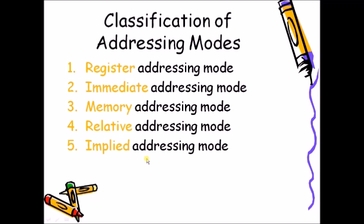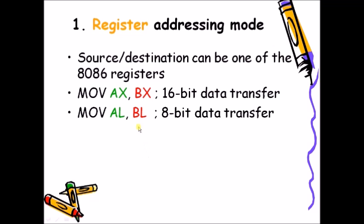In register addressing mode, the operand is placed inside a register. That register is given as part of the instruction. The source or destination can be one of the 8086 registers. If 16-bit registers are used, a 16-bit data transfer happens; if 8-bit registers are used, an 8-bit data transfer happens. When the original operand is inside a register and that register is given in the instruction, that is register addressing mode.